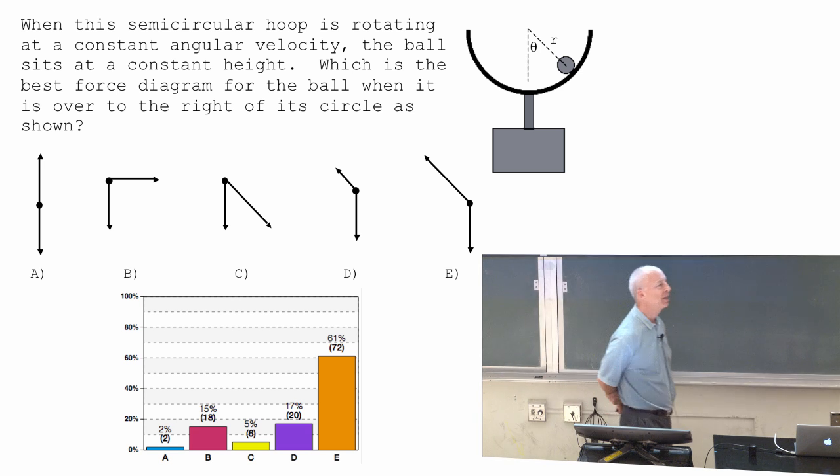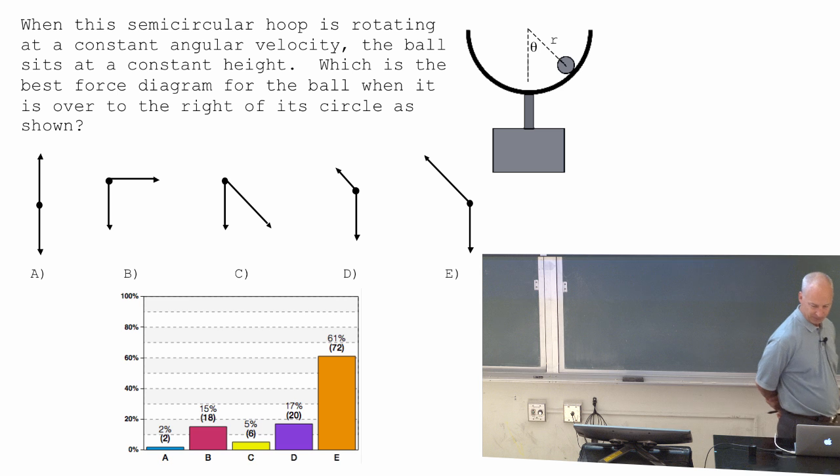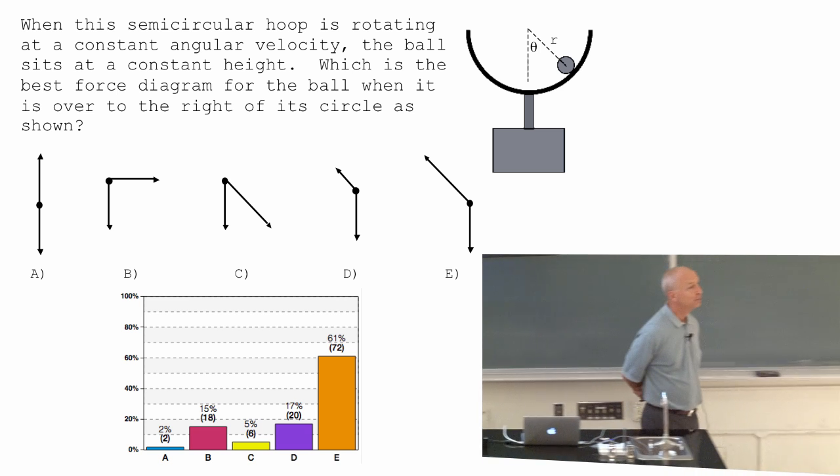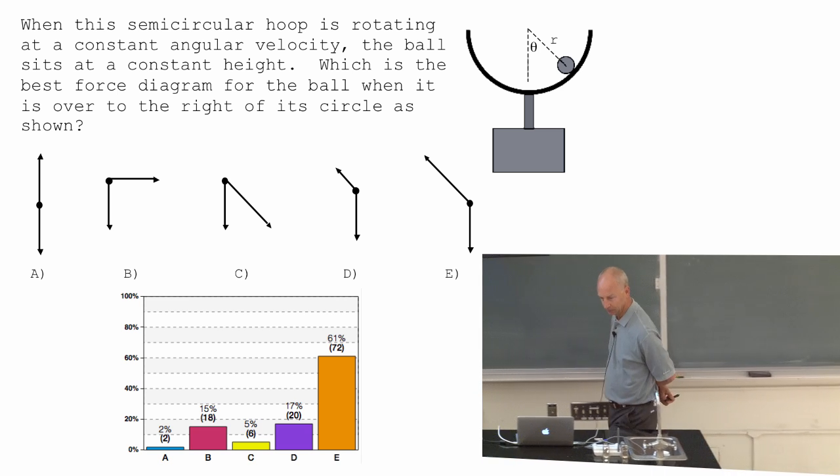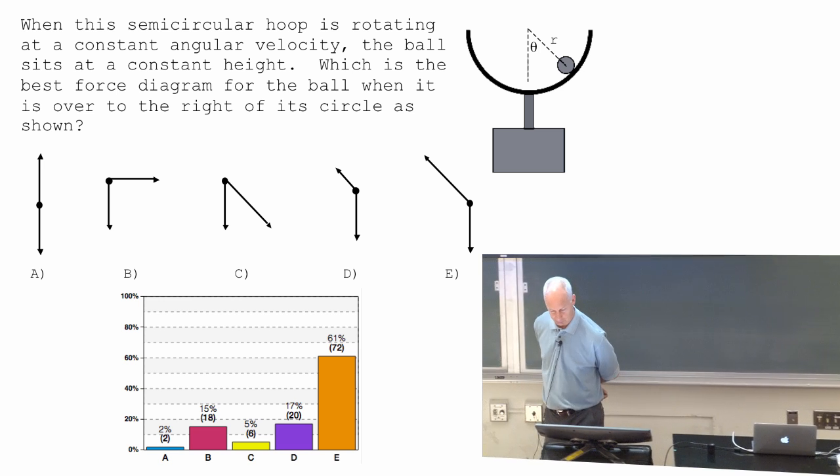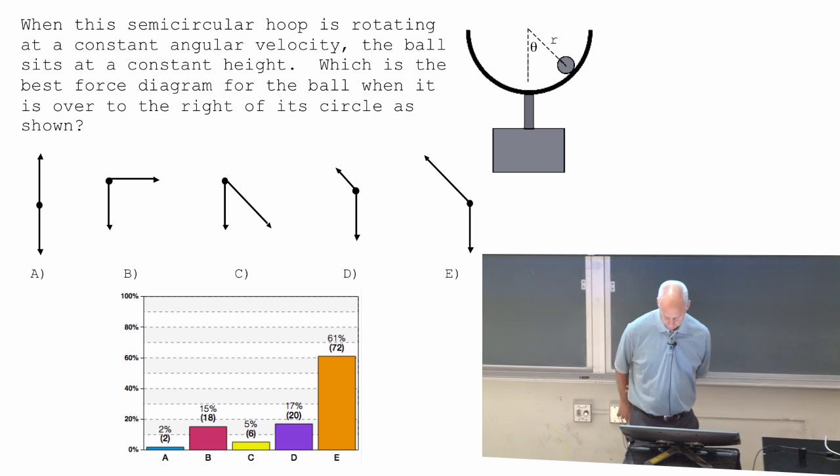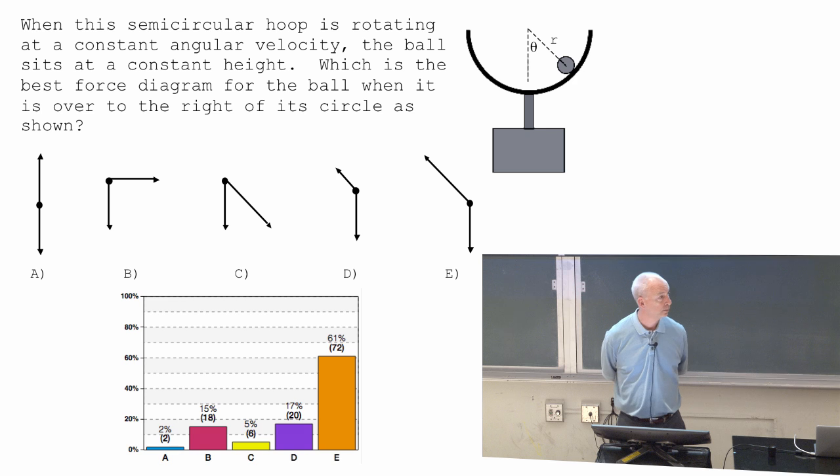What's the direction of the net force for E? Yeah. So it's rotating in the circle. We know that the acceleration vector goes towards the center of the circle. So you need a force diagram with a net force towards the center of the circle, which in this case is the left.